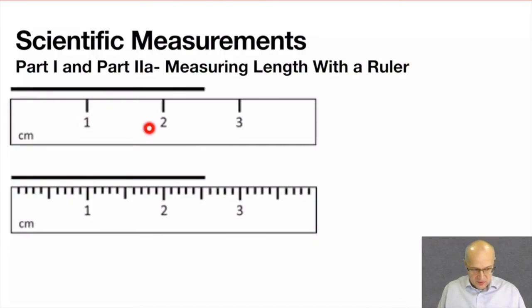This ruler, every tick mark that's written on this ruler is one centimeter. The unit is right over here. I know that this black line is greater than two but less than three. So my smallest unit of measurement is one centimeter.